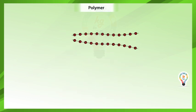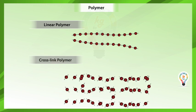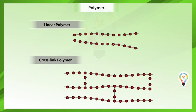Monomers may combine into two different ways to form a polymer. Linear polymer, like beads on a string. And cross-linked polymers, like beads on a net.